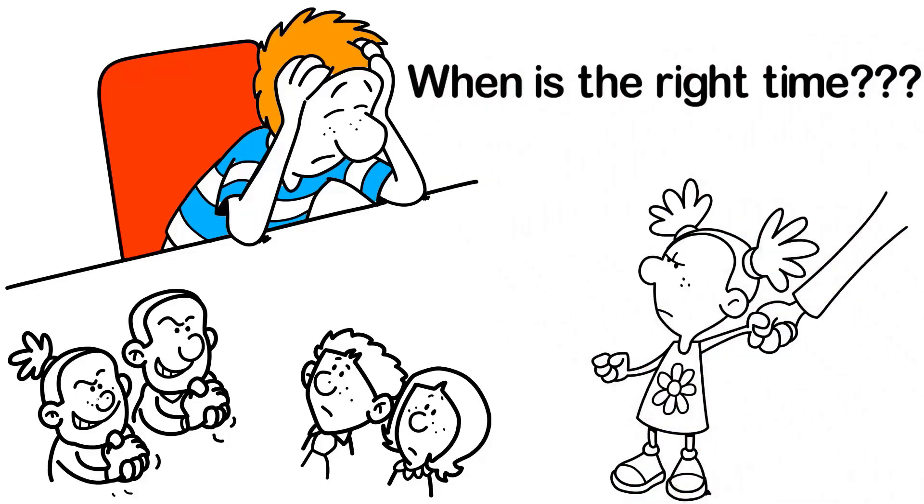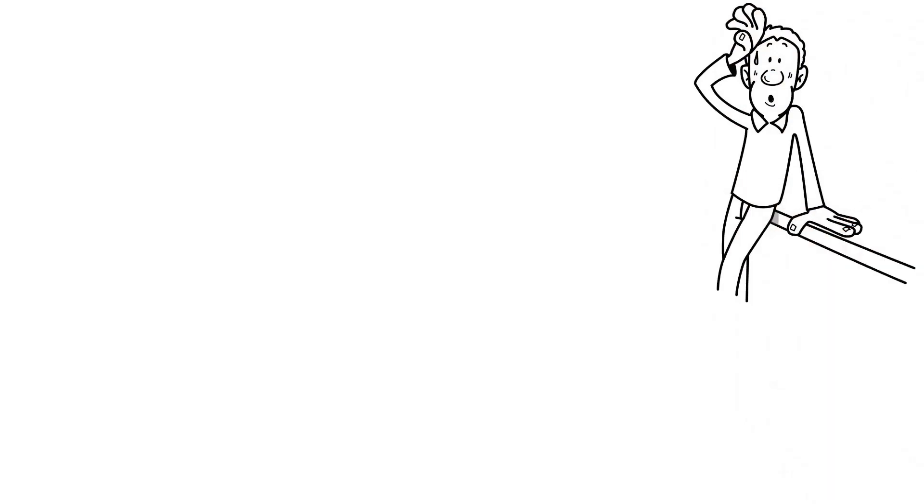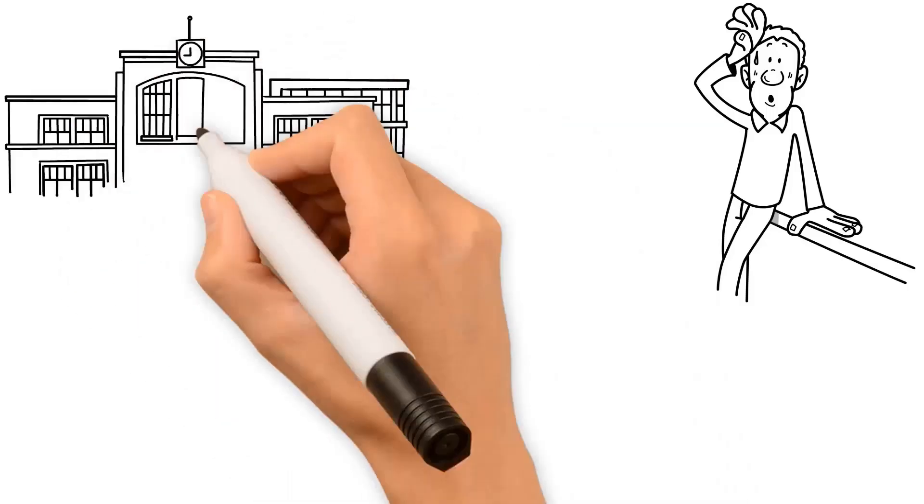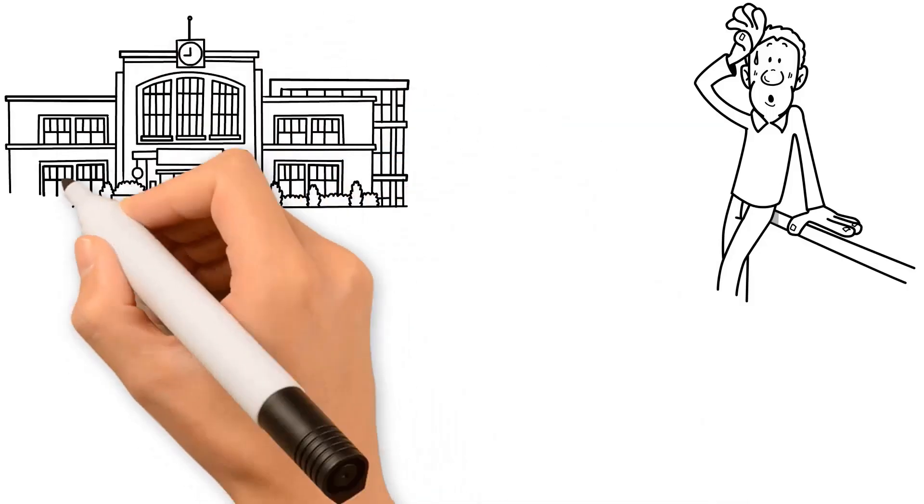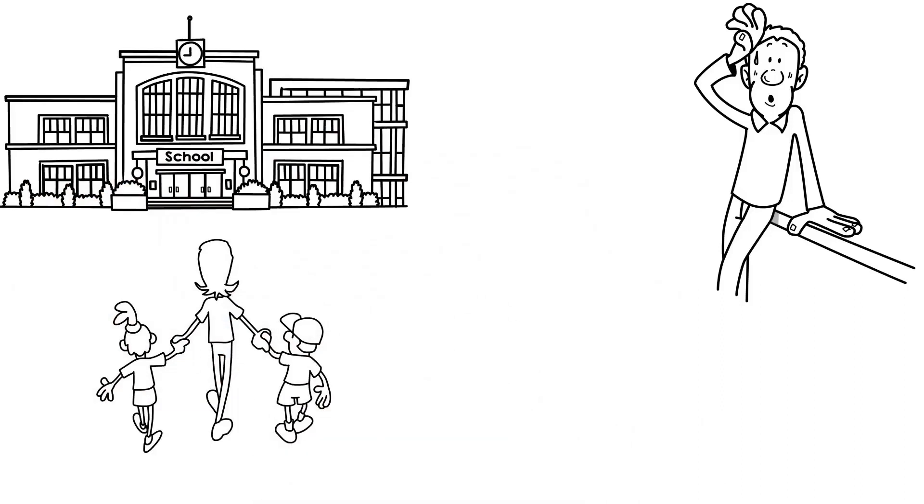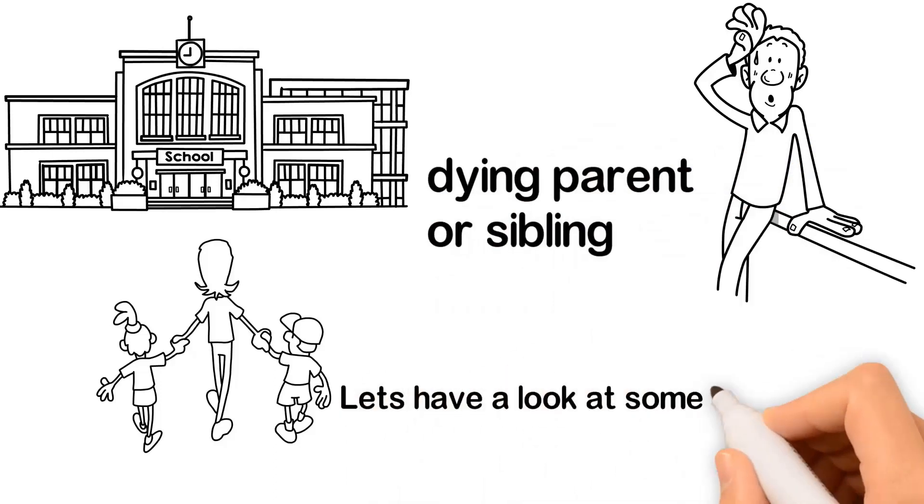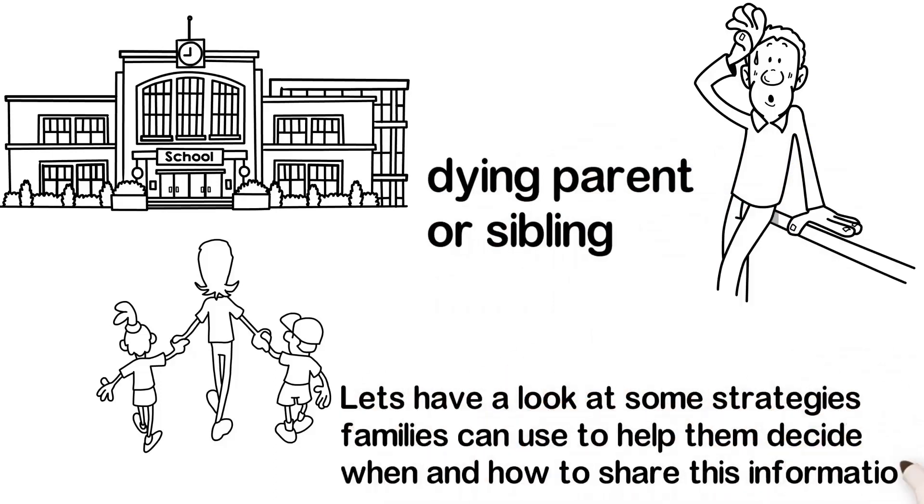So this leaves us with the question: when is the right time? With all this information at hand, deciding when to share this heartbreaking news with children still remains a daunting task. Some times are certainly better than others. Dropping them off at school is definitely not one of them. Bear in mind, however, that it rarely feels right to share such information, especially in the case of a dying parent or sibling.